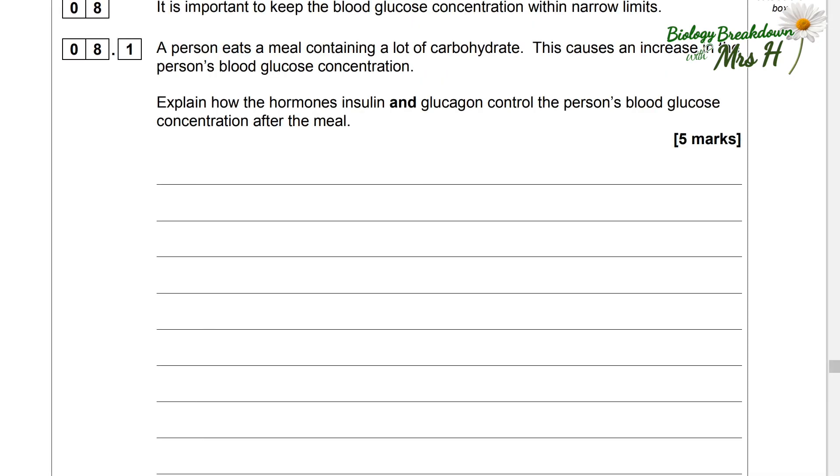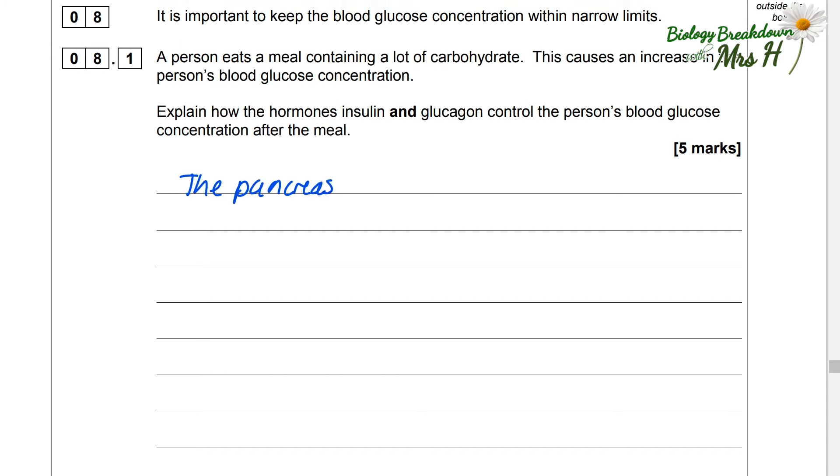Question 8. It is important to keep the blood glucose concentration within narrow limits. A person eats a meal containing a lot of carbohydrate. This causes an increase in the person's blood glucose concentration. Explain how the hormones insulin and glucagon control the person's blood glucose concentration after a meal. The pancreas detects an increase in blood glucose and it secretes insulin.